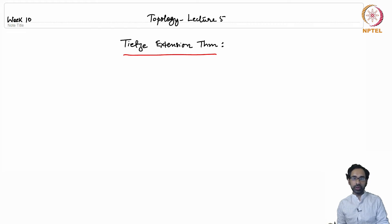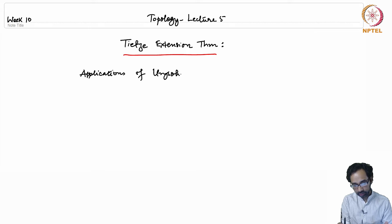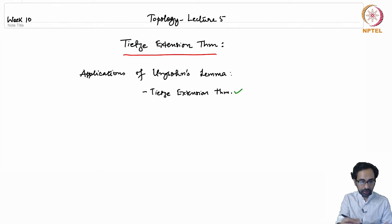Now we come to a wonderful application of Urysohn's Lemma for Normal Spaces which is called the Tietze Extension Theorem. Before I state the Tietze Extension Theorem, I should mention that among the applications of Urysohn's Lemma we have the Tietze Extension Theorem, which we will do in this lecture.